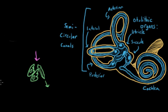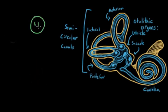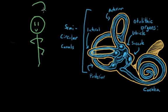And let's think back to the semicircular canals. As we spin, the fluid within them, the endolymph, moves along the direction that we're turning.